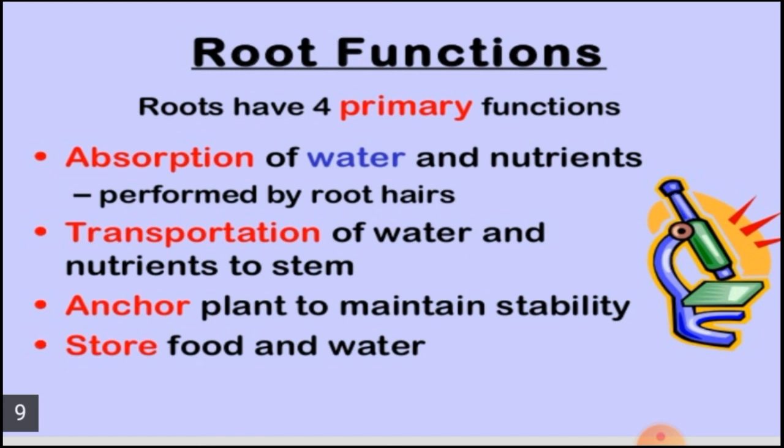Examples of plants that store food in their roots which we use as edible parts include carrot, garlic, onion, and radish. Today we discussed the root system, and in the next class we will be discussing the shoot system. Hope you understood well — thank you.